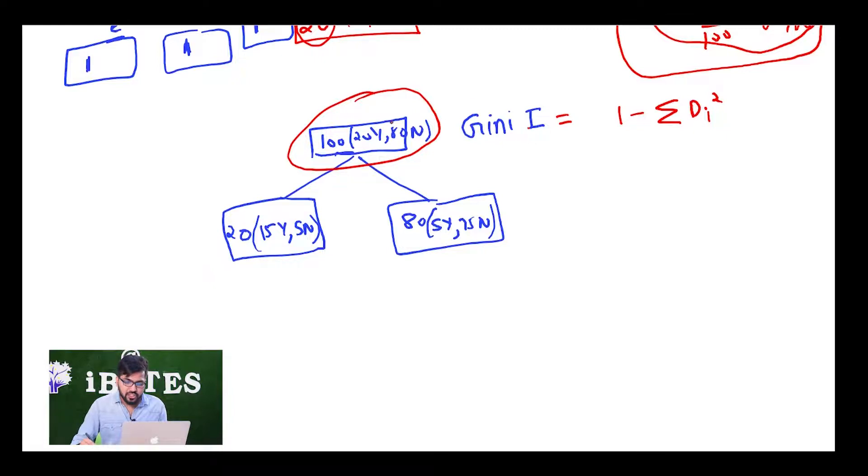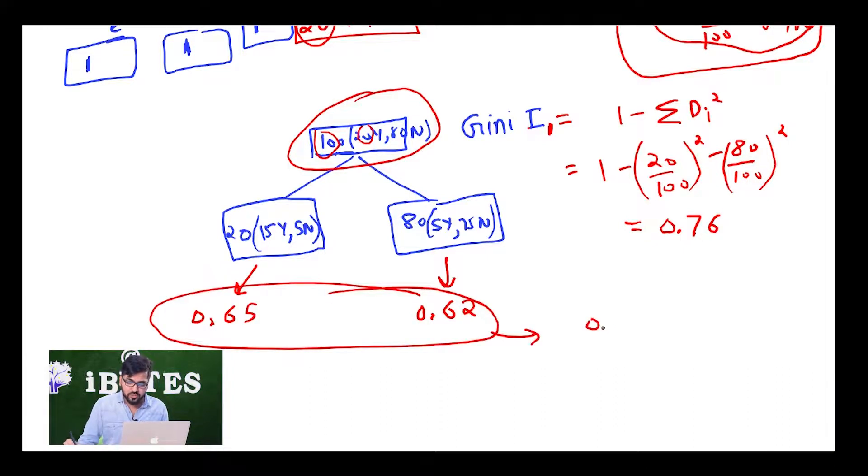So if I have to calculate Gini index for this block, this is going to be 1 minus 20 by 100 square minus 80 by 100 square. So this is going to be the Gini index. Let's say this is Gini index 1 before the split, and this comes out to be 0.76. Similarly, we are going to find Gini index for this block, let's say it comes out to be 0.65. Gini index for this comes out to be 0.62. We are going to find the weighted average of this again, let's say it comes out to be 0.64, and then we are just simply going to subtract these two: 0.12 is the difference of Gini index.